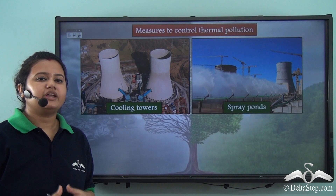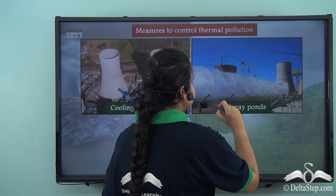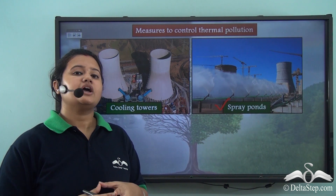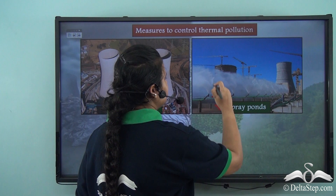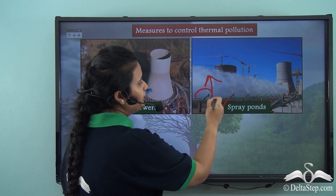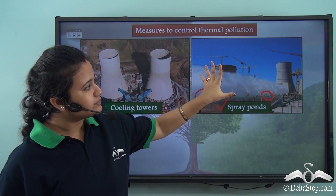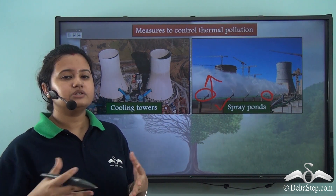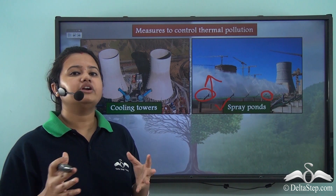The second way to control thermal pollution is by installing spray ponds. A spray pond is a type of pond where overheated water is released into cool air via nozzles or pipes. When this overheated water is sprayed into cool air via nozzles, it eventually cools down — so this is another way industries can cool down overheated water.